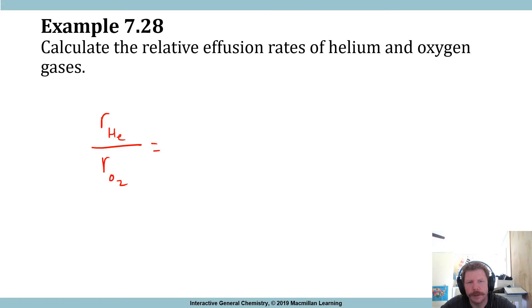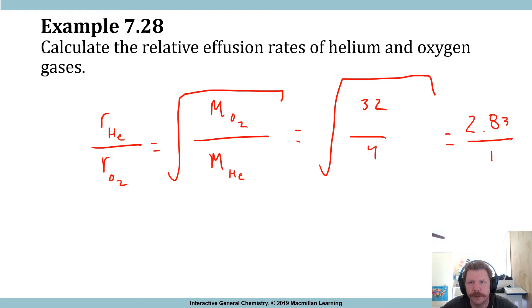the square root of the molar mass of gas number two, which is O2, so M_O2 divided by the molar mass of M_He. That's equal to 32 divided by 4. So what ultimately this means is 2.83 divided by 1, because you could take the square root of each one of these and ultimately solve that.